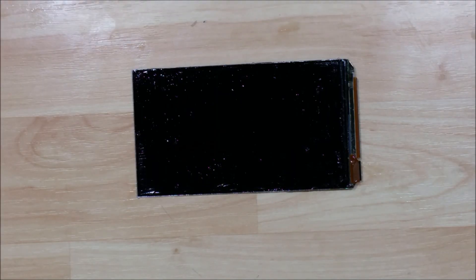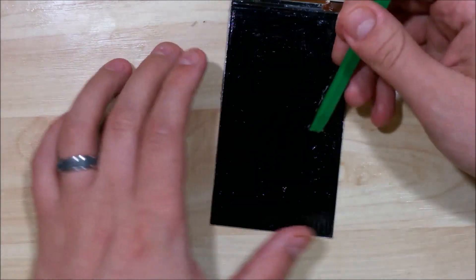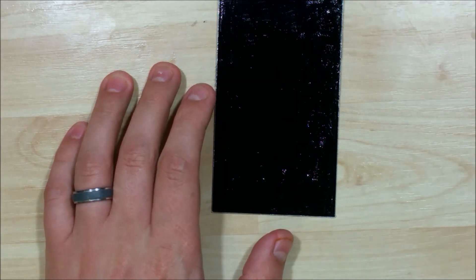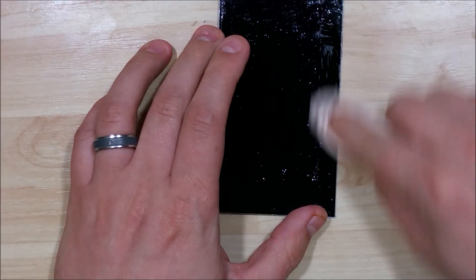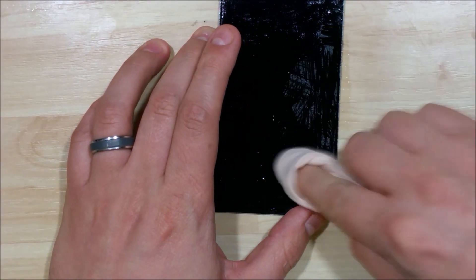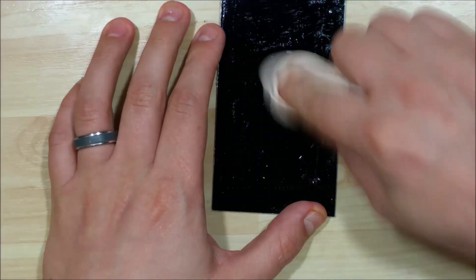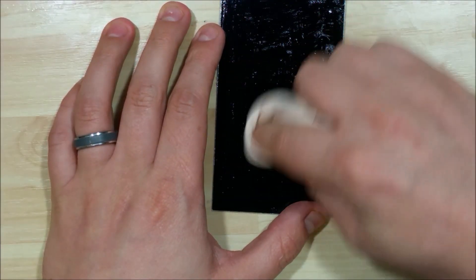Alright so we're back from letting it sit. I'm going to start with our scraping tool here and see how it comes off. It looks like it's a little bit easier but still not just wiping it off like I'm a little bit more used to. So you're just using our cloth here you can see that it's a little bit more pliable. You just have to scrub a little bit.